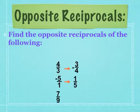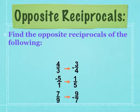The last example: find the opposite reciprocal of 7 over 9. Since 7 over 9 is positive, first find the reciprocal, which is 9 over 7. Then take the opposite, which is negative. So the opposite reciprocal of 7 over 9 is negative 9 over 7.